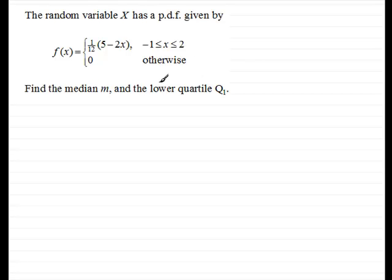What we've got to do is find the median m and the lower quartile Q₁. Now in any question like this I always like to sketch the probability density function. It goes between minus one and two and you've got a straight line function here, one twelfth of (5 - 2x). When you put x is minus one through here you end up with seven twelfths, and when you put two through you end up with one twelfth. So this goes from seven twelfths down to one twelfth, and it's zero outside that range.